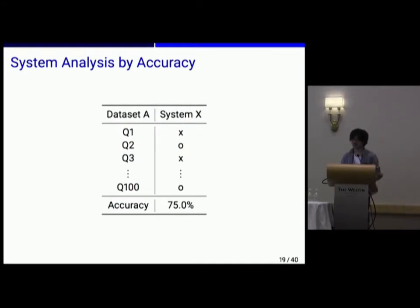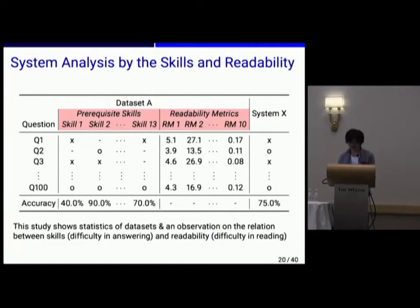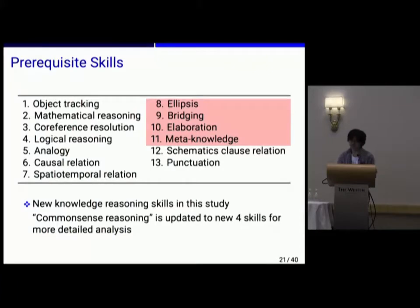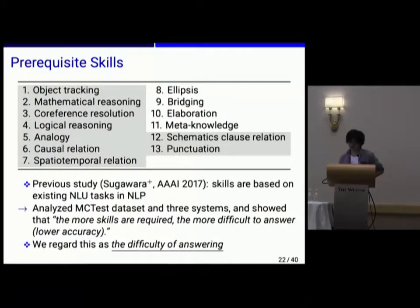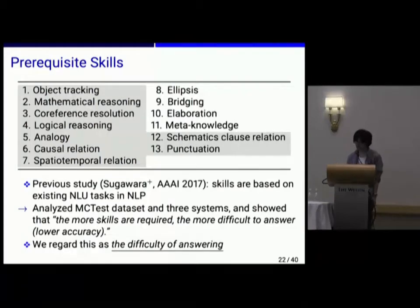We want to extend an evaluation scheme like a simple accuracy table to something that includes these metrics. Our evaluation methodology enables us to analyze systems using them. These are our definitions of required skills. We adopt a set of skills from a previous study as a basis and make an extension for knowledge reasoning. That previous study analyzed MC test datasets and three systems, and showed that the more skills are required in questions, the more difficult they are to answer. Based on this observation, we assume that the number of skills required to answer a question is an indication of answering difficulty.